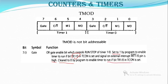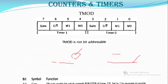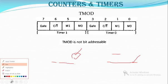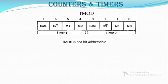Whenever there is no interrupt and whenever the timer run bit is set, the program will set this gate bit to 1 so that it can start working as a timer. But it will be cleared to 0 if the run bit alone is set with nothing mentioned about external interrupt — then it has to be cleared to 0. Whenever timer 0 is used, the gate can be set or cleared depending on the value of the external interrupt.